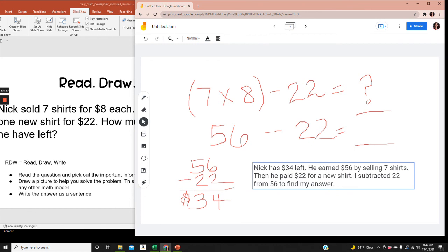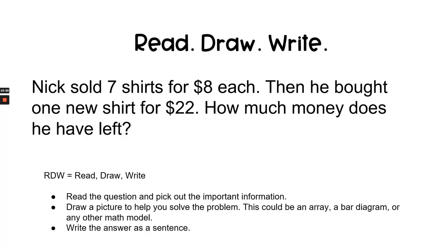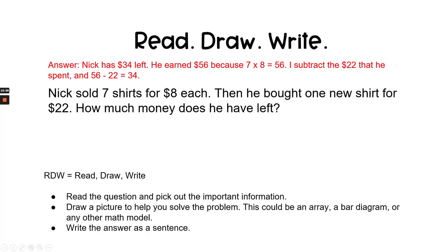Okay, let's check our answer. Answer. Nick has $34 left. He earned $56 because 7 times 8 equals 56. I subtracted the $22 that he spent and 56 minus 22 equals 34. Notice that the wording was not exactly the same between what I wrote on my Jamboard and what the real answer was. And that's okay. The wording can be different as long as the information is the same and the answer is the same.